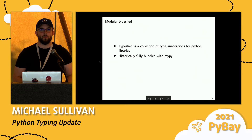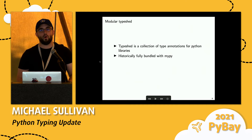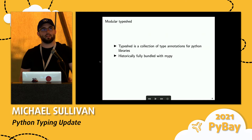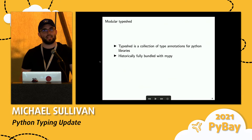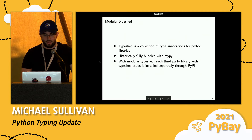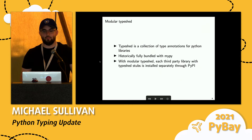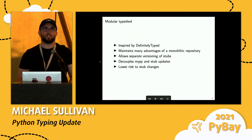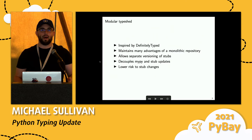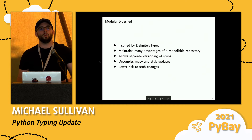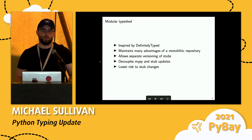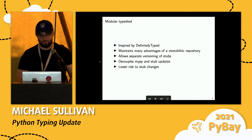One of the big ones is what we call modular type shed. If you're not familiar, type shed is a collection of type annotations for lots of different Python libraries. Historically, it had the standard library and a few important third-party libraries and would be bundled with MyPy itself. We've moved to a model called modular type shed, where each third-party library can be installed separately through PyPI — inspired by TypeScript's DefinitelyTyped. It maintains the advantages of a monolithic repository while allowing each library to be versioned independently, so type checkers can be released separately from stub changes.